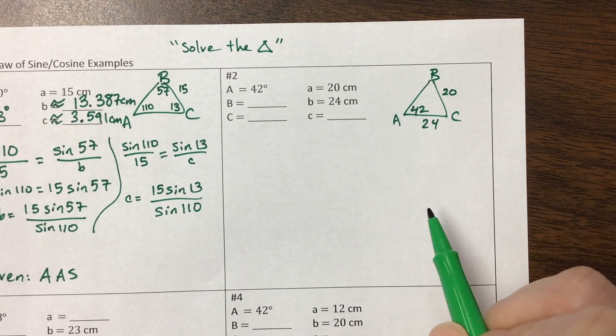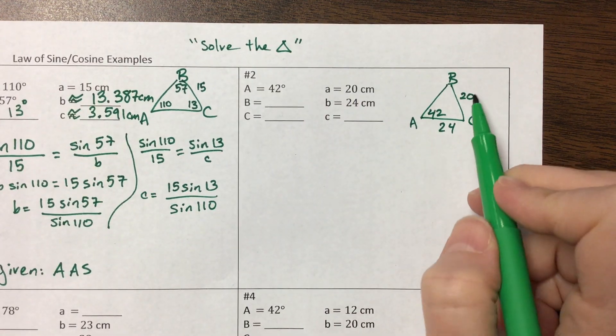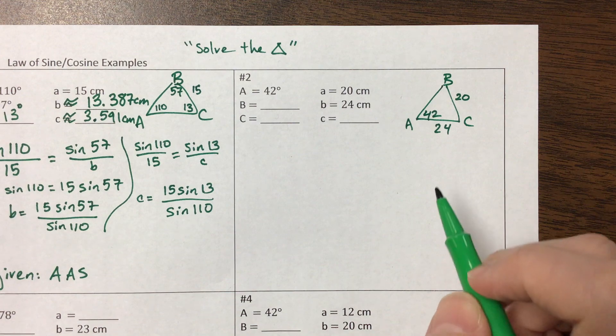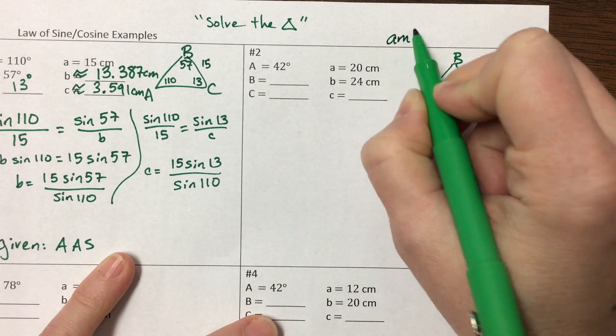This is angle, side, side. Okay, you cannot say angle, side, side because it's a bad word. You can't say side, side, angle because it's the bad word backwards. No bad words. So this one is what we call the ambiguous case.